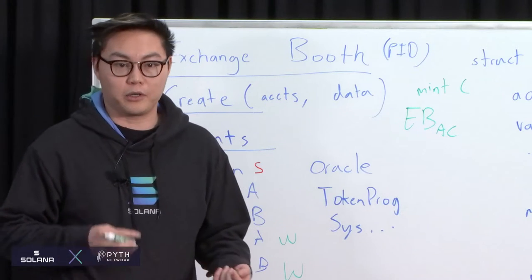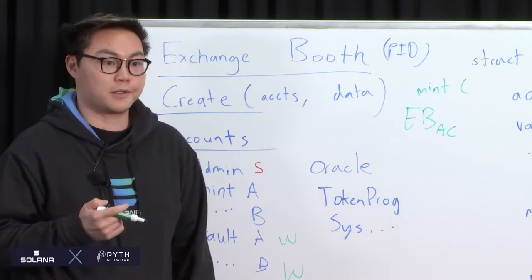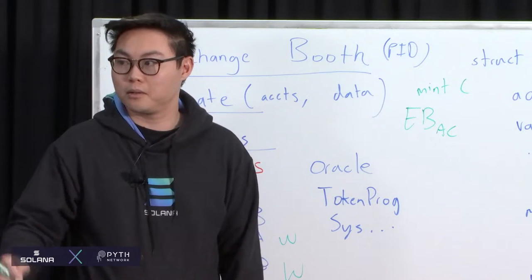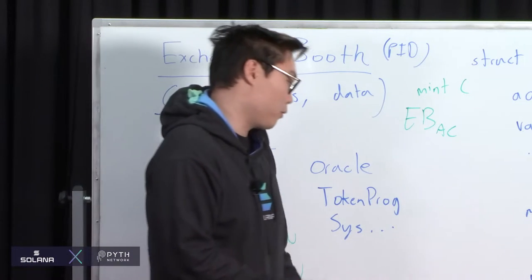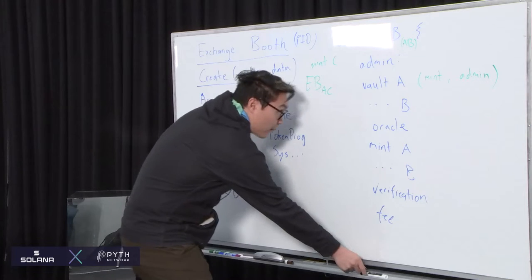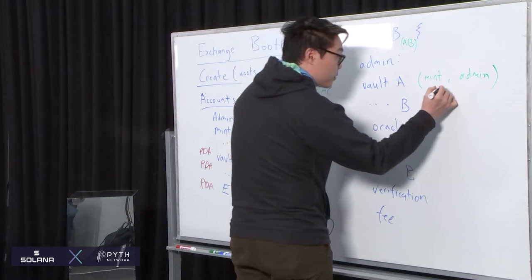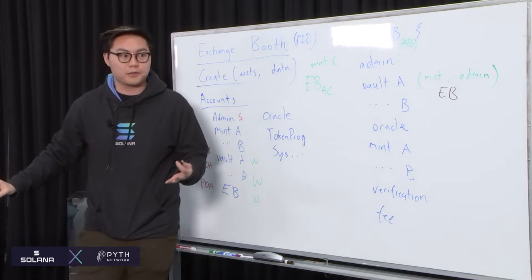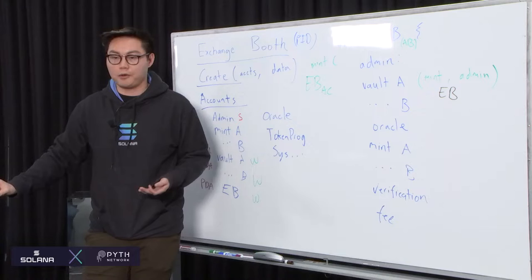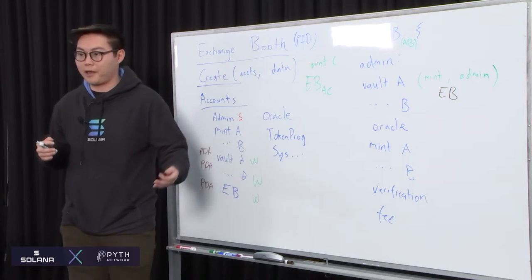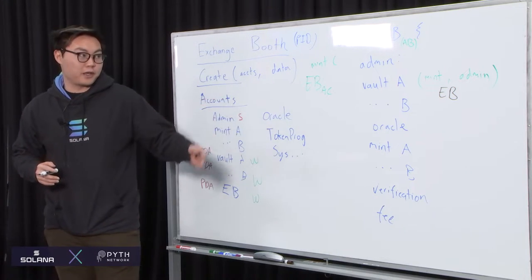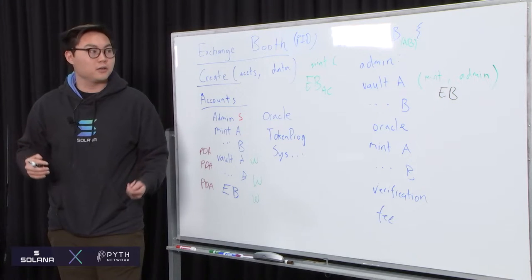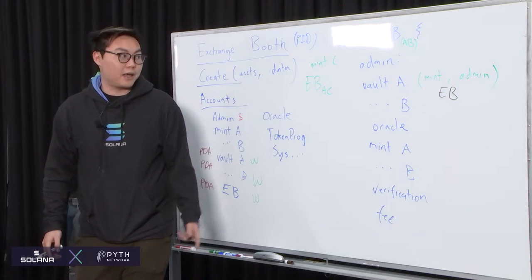If you wanted to make the vaults unique per exchange booth, you would just add the exchange booth as an additional seed — that's an optional seed. Adding the exchange booth as a unique seed increases the depth of the hash map, so every exchange booth will have a unique set of vaults. As for the exchange booth PDA seeds, one suggestion was admin plus mint A and mint B, which is probably sufficient to uniquely identify a particular exchange booth. You could also add the oracle as a seed if you wanted to allow different oracles for the same admin and mint pair.